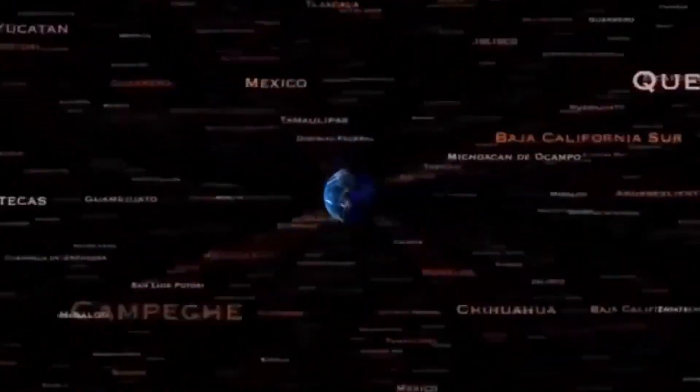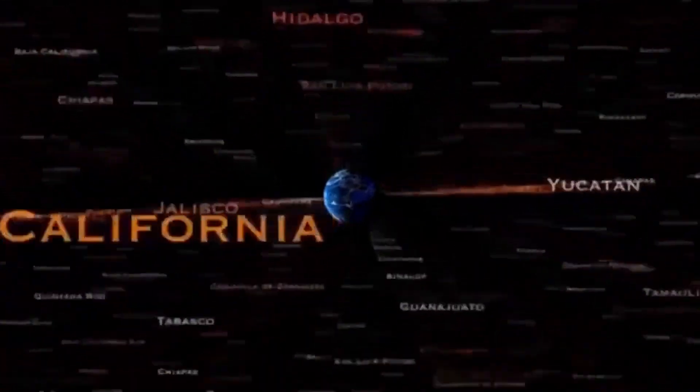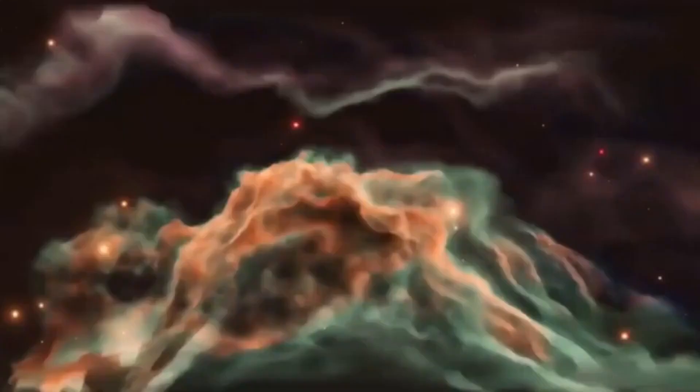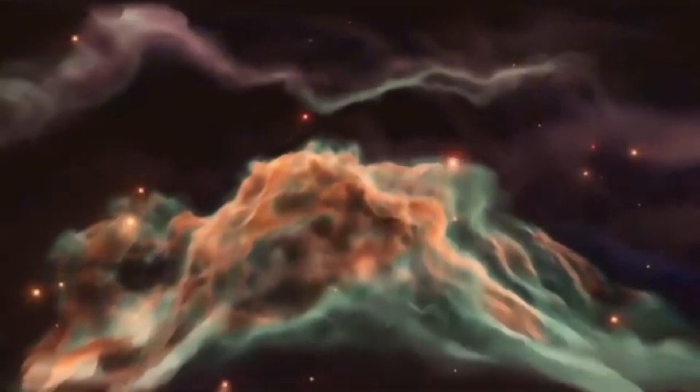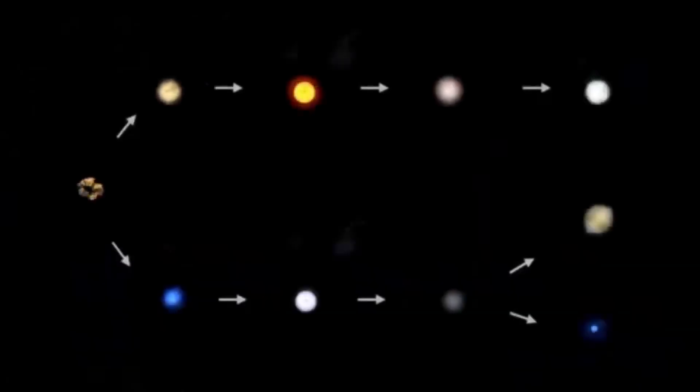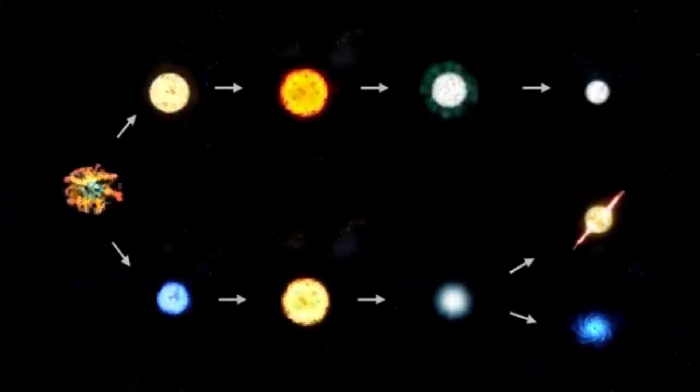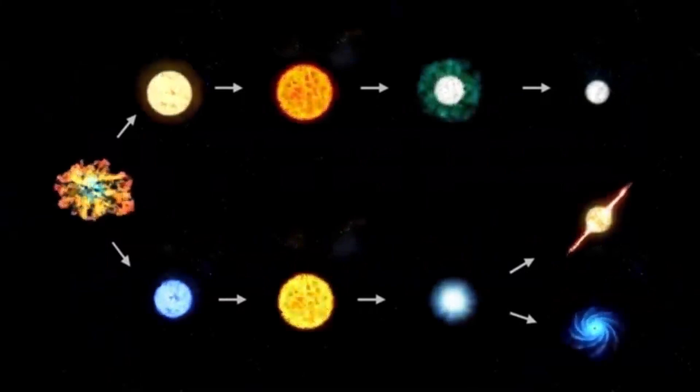Betelgeuse isn't just big, it's a cosmic rebel, living fast and dying young. Unlike our sun, a steady burner that'll shine for billions of years, red supergiants like Betelgeuse are reckless. They burn through their fuel at a ferocious pace, fusing hydrogen into helium, then helium into carbon, oxygen, and heavier elements in a nuclear frenzy. This star is in its final act, a phase where stability gives way to chaos. It's already exhausted its hydrogen core, and now it's forging heavier elements, each fusion cycle bringing it closer to its explosive end.